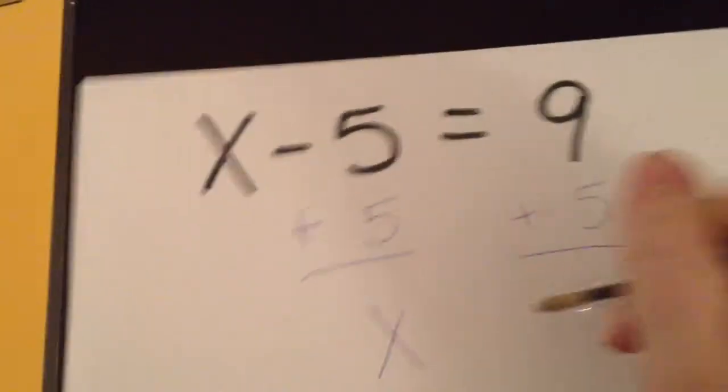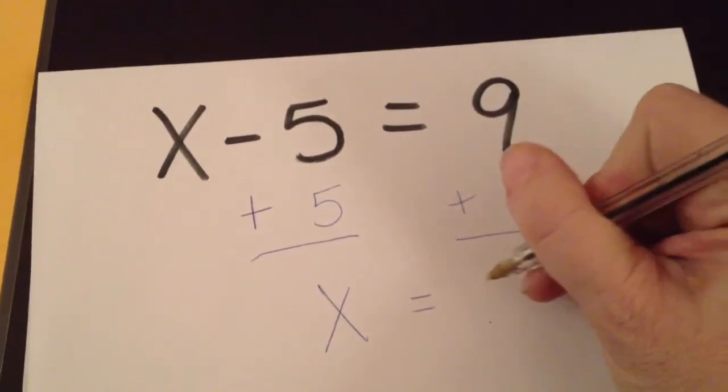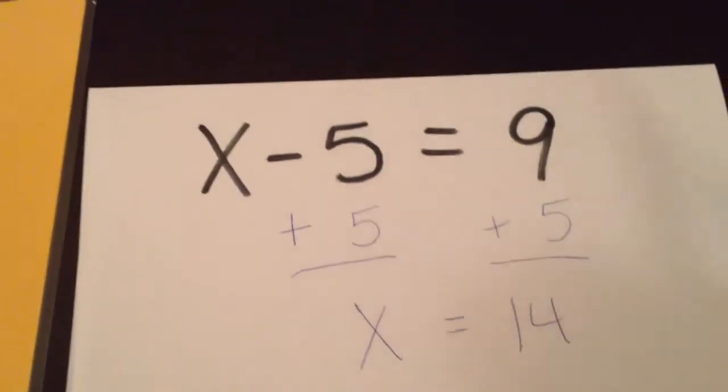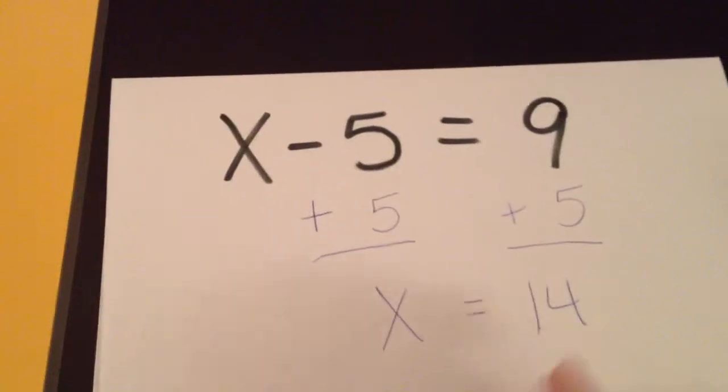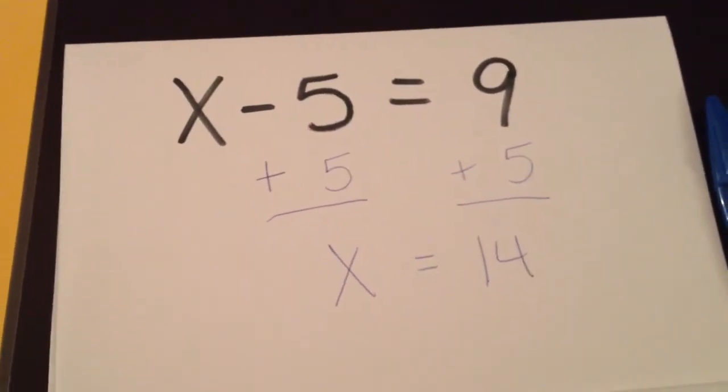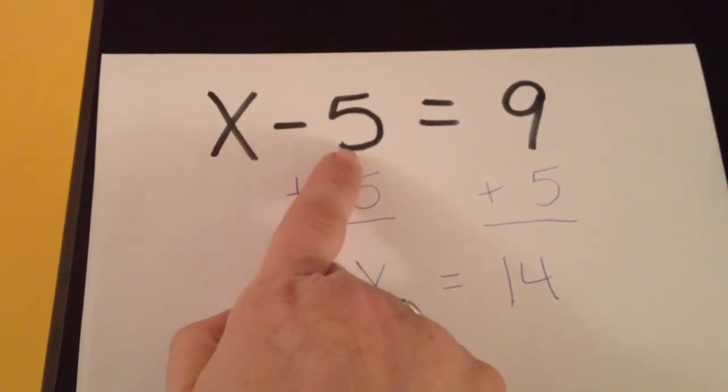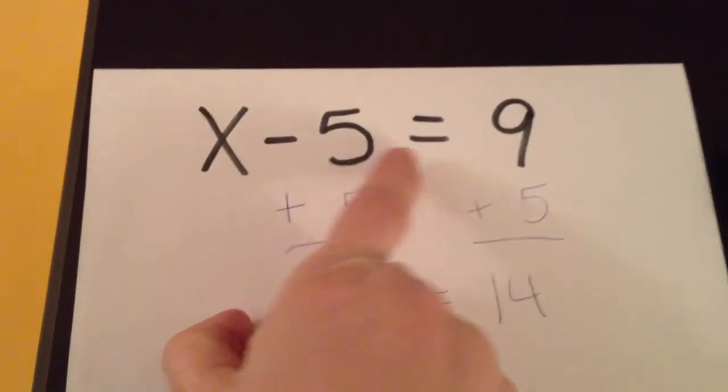We have x left on this side of our equation, and 9 plus 5 equals 14. You'll notice that when you plug in this answer into the original problem, it will check. So if you look at x equals 14, 14 minus 5 equals 9, which is equal to 9.